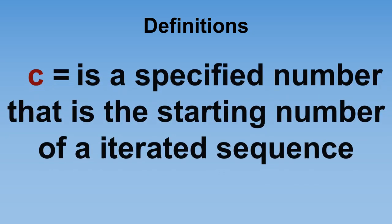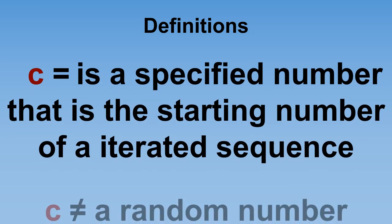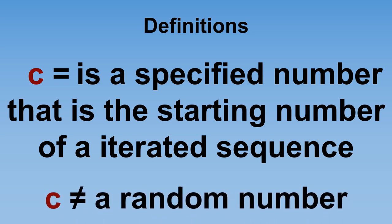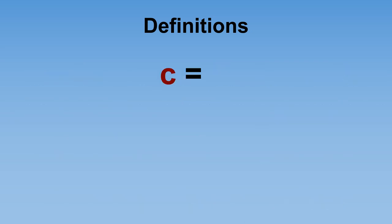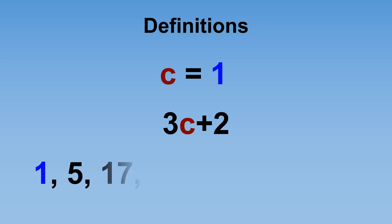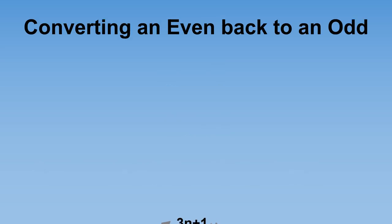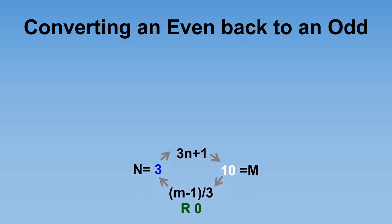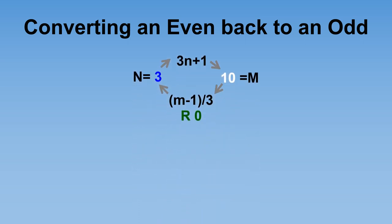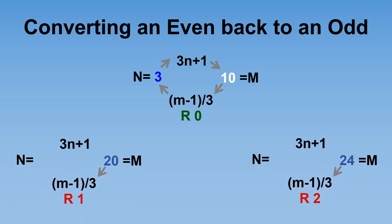C is a number provided to you to start an iterated process through a function with an explicit task in mind — in our case to make a sequence of numbers. While not shown here, there will always be a source that provides C. Notice that not only is C the lead number of the sequence, but it is also the number used to start generating the iterated process. We need to understand how to convert an even number back to an odd number. This is done by simply reversing the 3n+1 process. But as we know, this does not work for all even numbers.